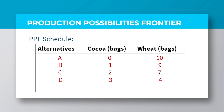At production alternative D, if you compare it to A, you can see that by producing three bags of cocoa, the country is only able to produce four bags of wheat. In that case, six bags of wheat have been sacrificed to be able to achieve that production target. Thus, it is proper to say that the opportunity cost of producing three bags of cocoa is six bags of wheat which have been sacrificed.